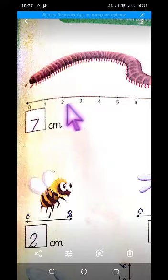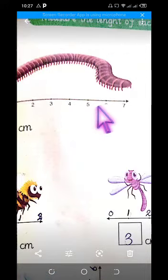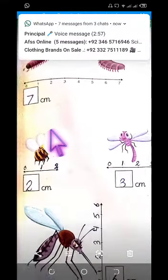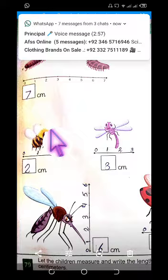One, two, three, four, five, six, and seven. Okay? Seven centimeters. This snail is seven centimeters.